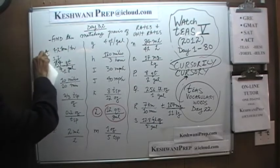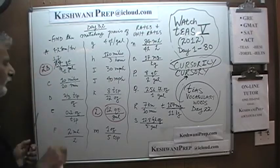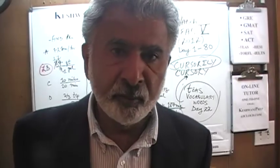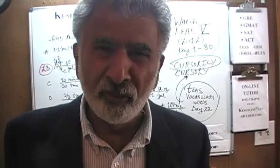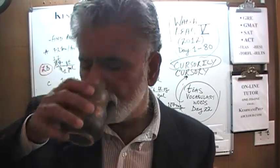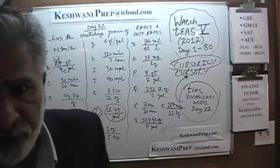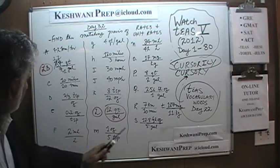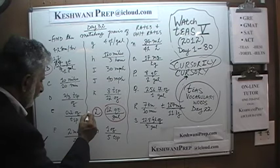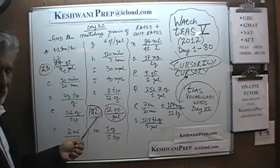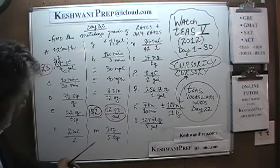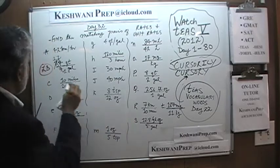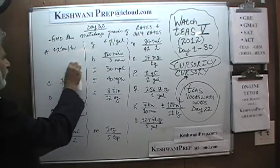We are going to erase pairs from the blackboard as we find them so it is not too crowded. B and L go together — that is the pair. We know B matches L, so you can put L next to B on your paper. Let's move on to the next one.